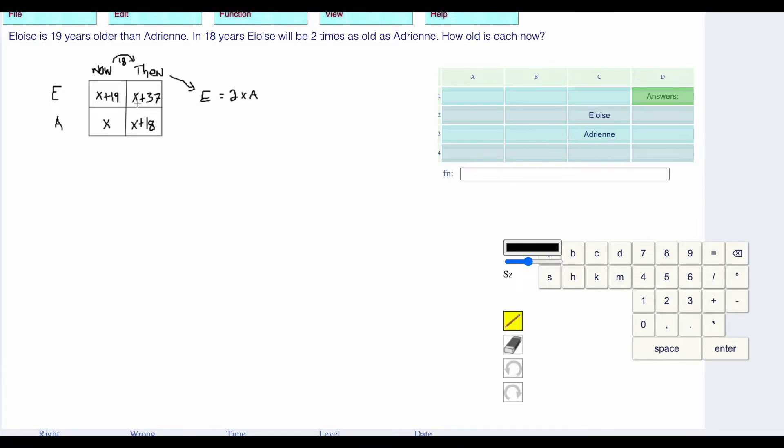Eloise then will be X plus 37 is equal to two times Adrian, which is in brackets X plus 18. I'm going to simplify. X plus 37 is equal to 2X plus 2 times 18 is 36.